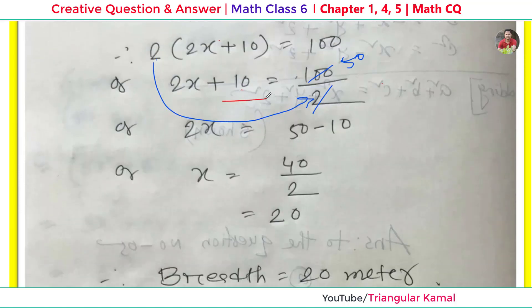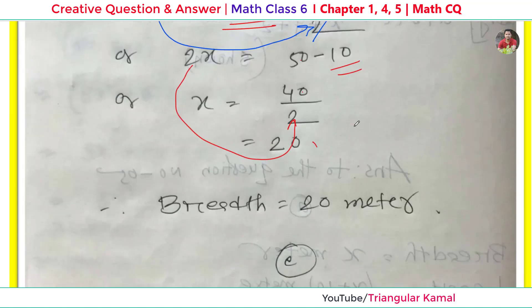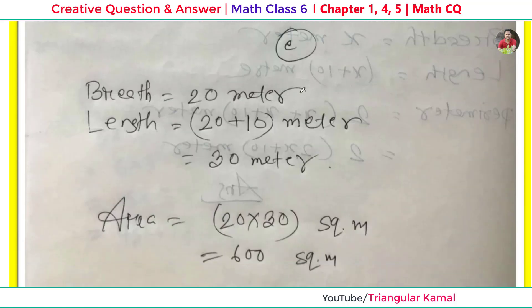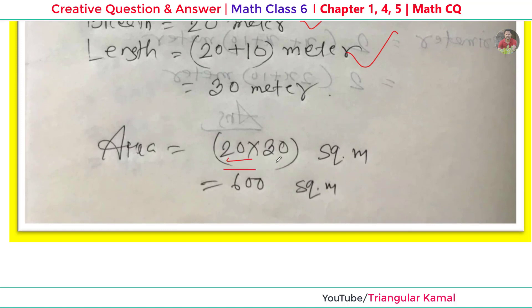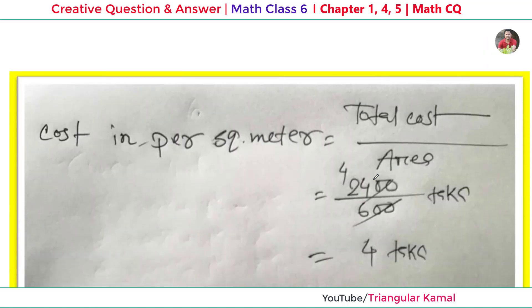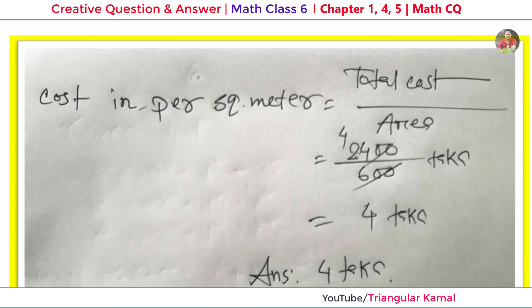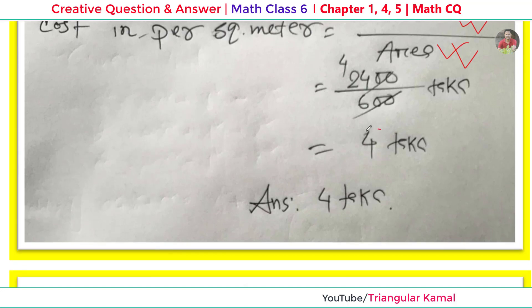Continuing: 2x + 10 = 50, so 2x = 50 − 10 = 40, and x = 20. Therefore breadth is 20 meters and length is 20 + 10 = 30 meters. Area = length × breadth = 30 × 20 = 600 square meters. Total cost is 2400 taka. Cost per square meter = total cost ÷ area = 2400 ÷ 600 = 4 taka per square meter.